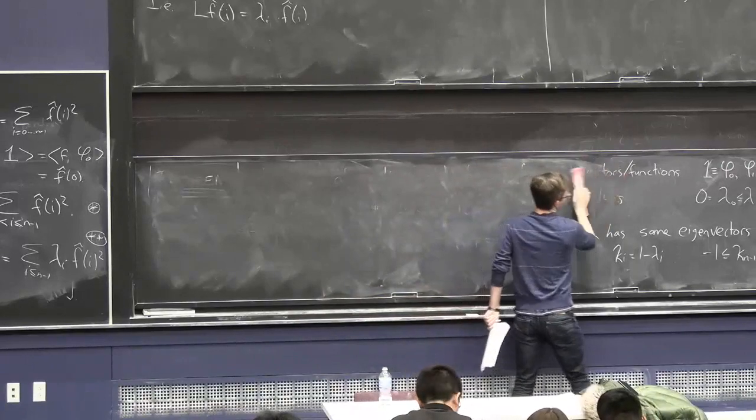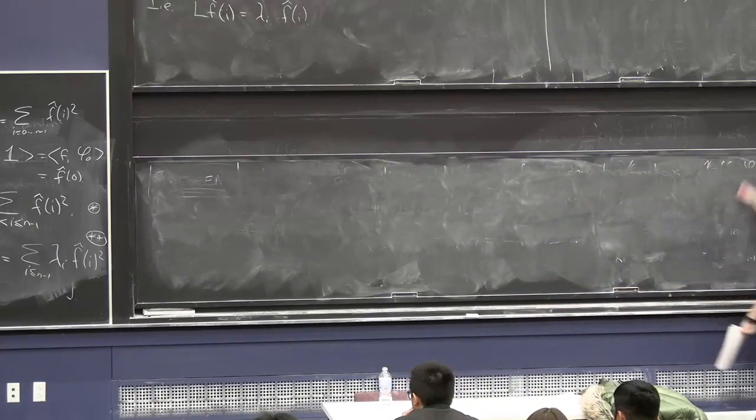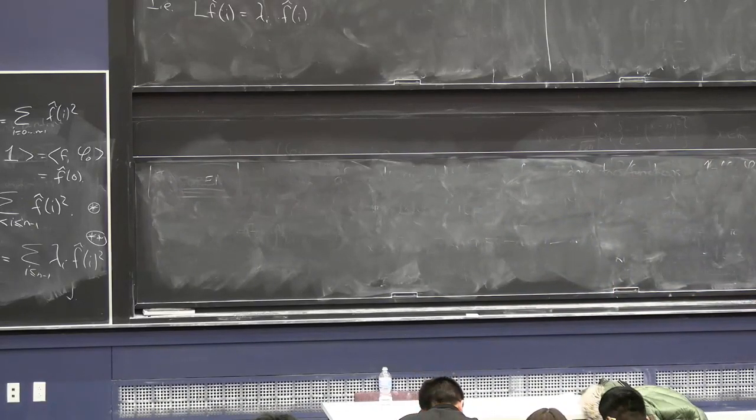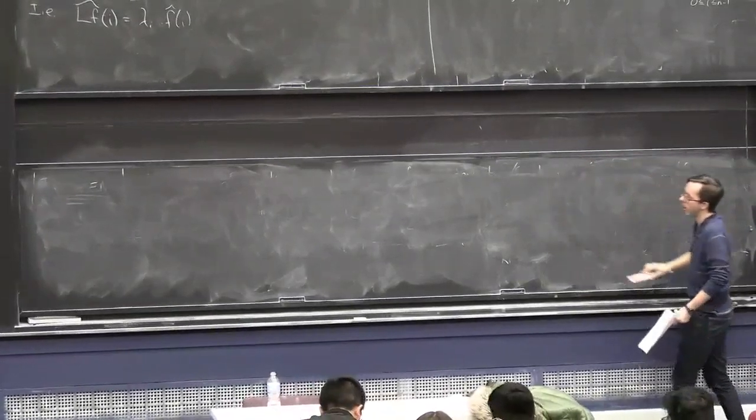And we were particularly interested in the sparsest cut problem, which was roughly speaking to find the set of minimum conductance. This is sort of the worst bottleneck for the random walk in a graph.